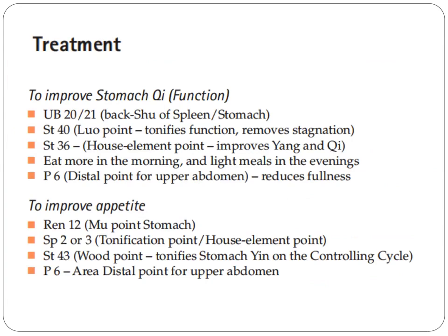For treatment, we need to improve stomach chi and function. We use UB20 and UB21, which are the back shu points of the spleen and stomach. We use Stomach 40, which is the luo point — it tonifies function and removes stagnation. Stomach 36, the earth element point, improves yang and chi. Eat more in the morning and have light meals in the evening.